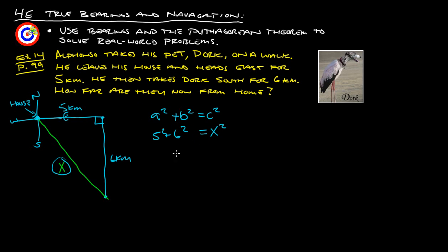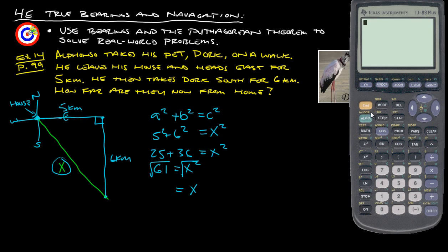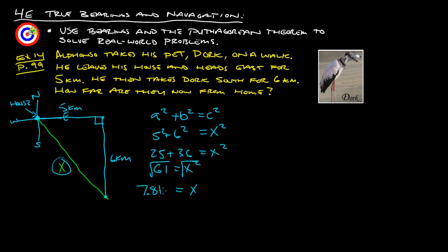Five squared plus six squared equals x squared. So that's 25 plus 36 equals x squared. Add those together and we get 61. We don't want to know what x squared is. We want to know what x is. So we square root to get rid of the square. Let's calculate that out. We get square root of 61. We get 7.81, and it's in kilometers. So the question says, how far are they now from home?